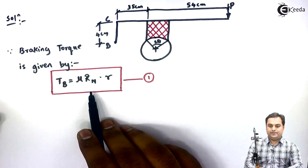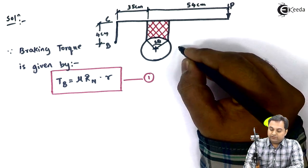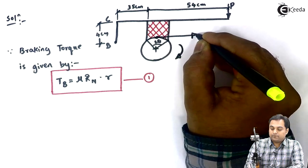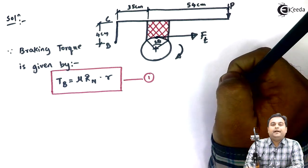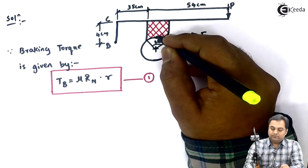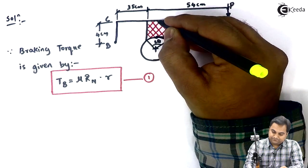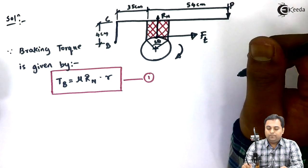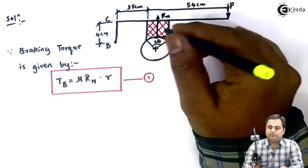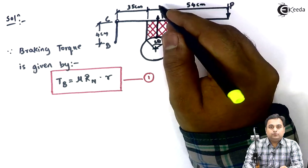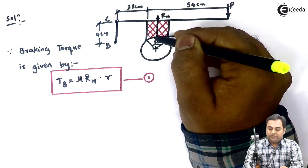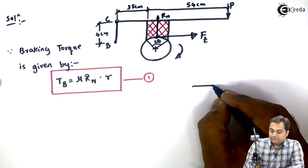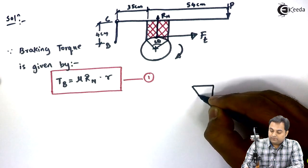Next we will calculate R_N. Since the rotation is clockwise, the tangential force would be towards the right. The normal reaction is provided by the drum towards the brake, so the normal reaction acts vertically upward. I will take the moment of all forces about point C, and I need to know the distance between point C and R_N. For that, I will draw a triangle.